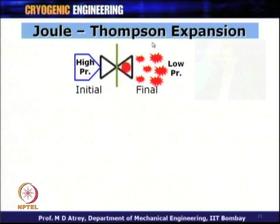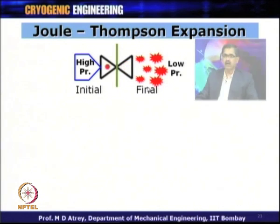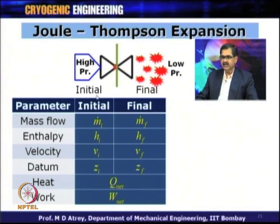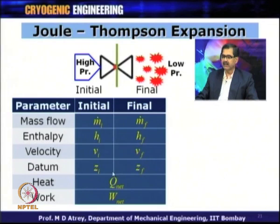Now we come to the very important Joule-Thompson (JT) expansion. Whenever high-pressure gas passes through a constriction — a valve or capillary tube — the gas expands from high pressure to low pressure, which may result in lowering of temperature. The gas enters at a particular pressure and temperature and leaves at lower pressure, with a possibly different temperature. To analyze this, we must compare parameters at the initial and final states: mass flow rate, enthalpy, velocity, and datum level, along with heat and work involved.